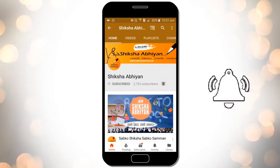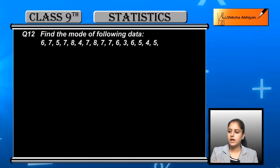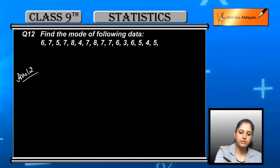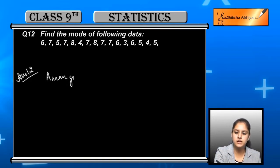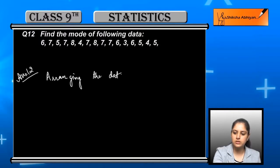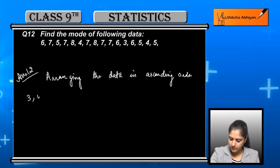Question number 12: Find the mode of the following data. To find the mode, arrange the data in ascending order.